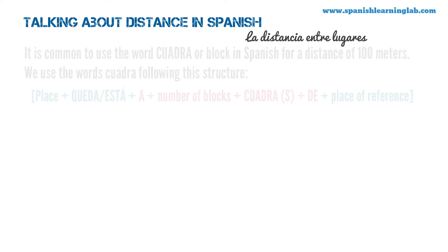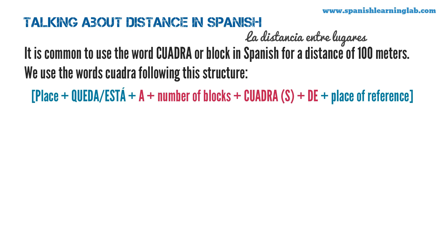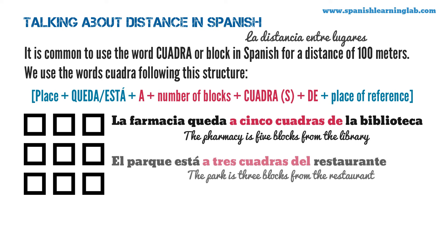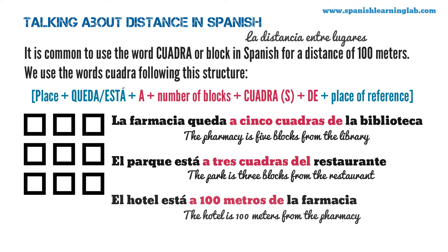Talking about distance in Spanish — la distancia entre lugares. It is common to use the word cuadra, or block, for a distance of 100 meters. We use cuadra following this structure: place plus queda or está, plus a, plus number of blocks, plus cuadra or cuadras, plus de, plus place of reference. For example: La farmacia queda a 5 cuadras de la biblioteca. El parque está a 3 cuadras del restaurante. You can also say the specific distance in meters, yards, and so on. For example: El hotel está a 100 metros de la farmacia.